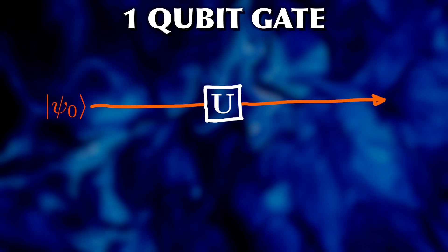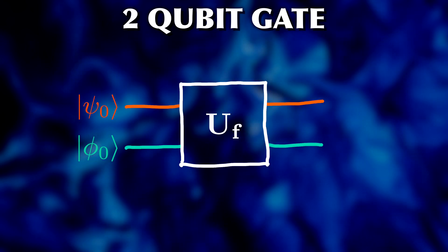Operating on just a single qubit is very limiting. So we also use two qubit gates. An operation between two qubits that performs some binary mathematical function f.